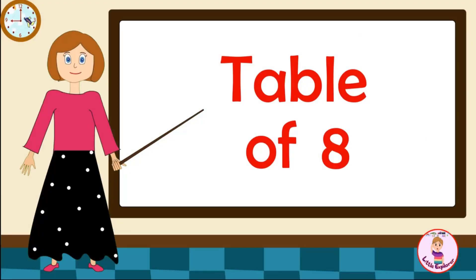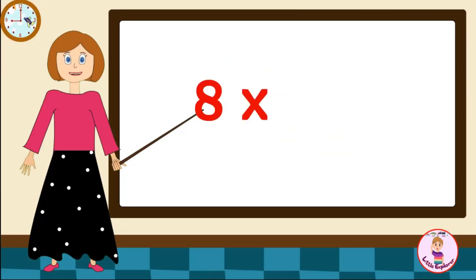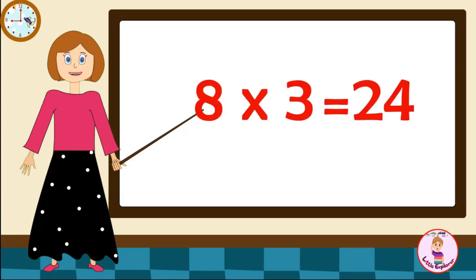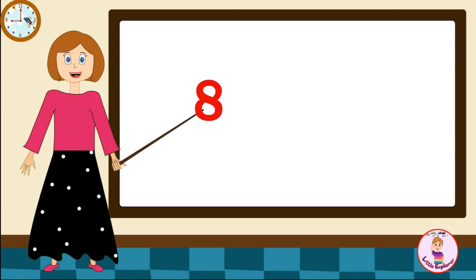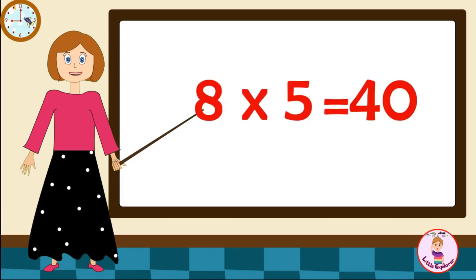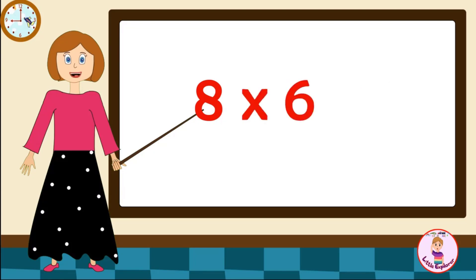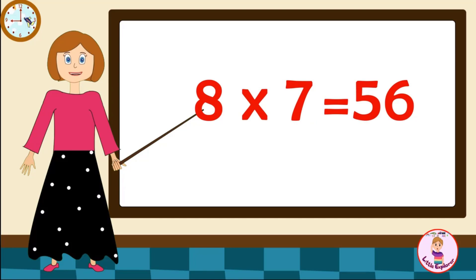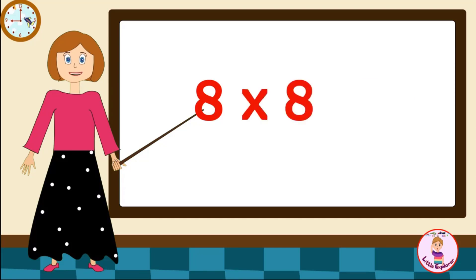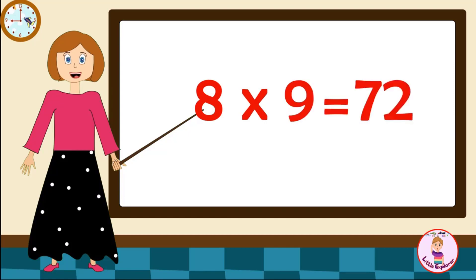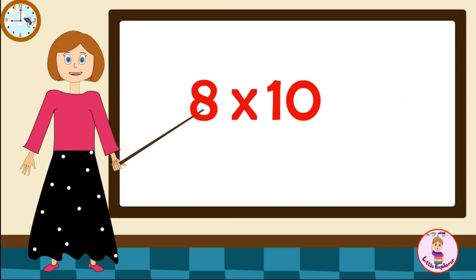Table of Eight. Eight-one's are eight. Eight-two's are sixteen. Eight-three's are twenty-four. Eight-four's are thirty-two. Eight-five's are forty. Eight-six's are forty-eight. Eight-seven's are fifty-six. Eight-eight's are sixty-four. Eight-nine's are seventy-two. Eight-ten's are eighty.